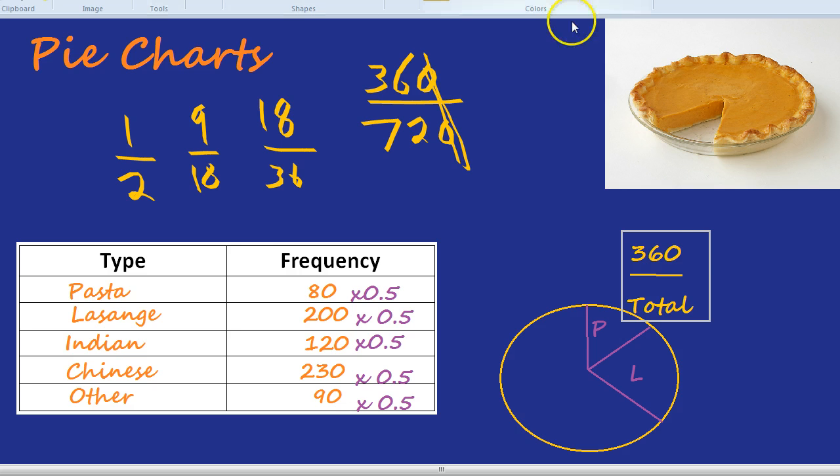And the formula is, you do 360 divided by the total of the frequencies. 360 divided by the total of the frequencies. Sometimes you'll be given the total, sometimes you have to count it up. But either way, that is the secret for doing your wonderful pie chart.